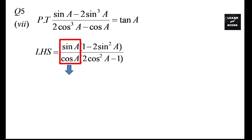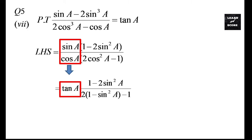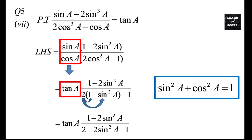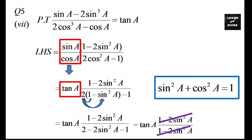Since sinA/cosA = tanA, we can rewrite it as tanA × (1 - 2sin²A) / (2cos²A - 1). Instead of cos²A we can substitute 1 - sin²A, because sin²A + cos²A = 1. I selected cos²A because in the numerator the coefficient of sin²A is negative 2, and substituting avoids sign mistakes. After opening the bracket in the denominator it becomes tanA × (1 - 2sin²A) / (2 - 2sin²A - 1), which simplifies to tanA × (1 - 2sin²A) / (1 - 2sin²A). Cancelling (1 - 2sin²A), the answer is tanA, which is the right side.